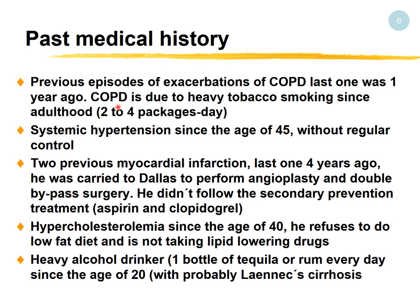COPD is due to heavy tobacco smoking since adulthood, two to four packs of cigarettes per day. Systemic hypertension since age 45 without regular control. Two previous myocardial MIs, the last one four years ago, after which he underwent angioplasty and double bypass surgery. He did not follow secondary prevention treatment — not taking aspirin or clopidogrel. Hypercholesterolemia since age 40. He refuses a low-fat diet and is not taking lipid-lowering drugs such as statins. He is a heavy alcohol drinker — one bottle of tequila or rum every day since age 20, probably with liver cirrhosis.